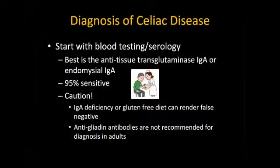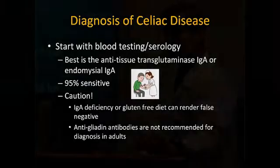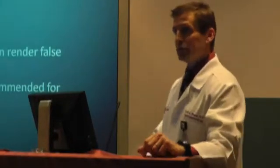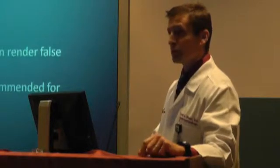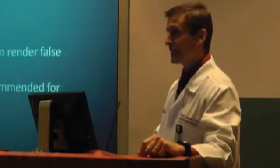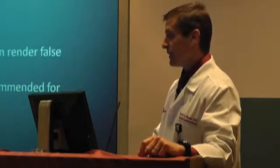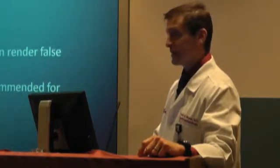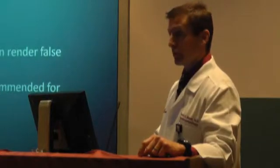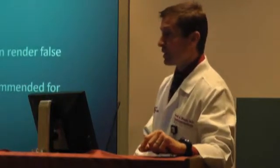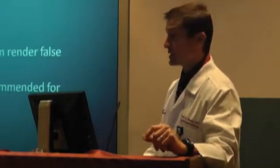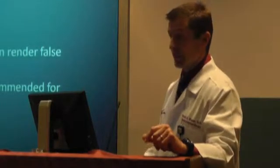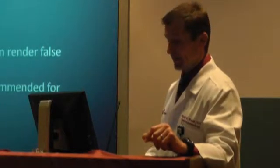Anti-gliadin antibodies are what we used to use, but we really don't recommend those anymore for adults. Many patients have come in with a positive anti-gliadin antibody and were told they have celiac disease — it's very poorly sensitive and specific and is wrong about a third of the time. Don't ever let someone make a diagnosis of celiac disease based on an isolated positive anti-gliadin antibody.